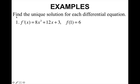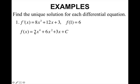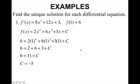We want to find the unique solution for each differential equation. Since I have F prime given, I need to find F by taking the antiderivative using the power rule: add 1 to 3 to get 4, divide by 4 — 8 divided by 4 gives me 2; add 1 to the exponent to get 2, divide by 2 — 12 divided by 2 gives me 6. The antiderivative of the constant is the constant times x plus C. Now I solve for C using x equals 1, y equals 6, and I get C equals negative 5. So my final answer is f(x) equals 2x to the fourth plus 6x squared plus 3x minus 5.